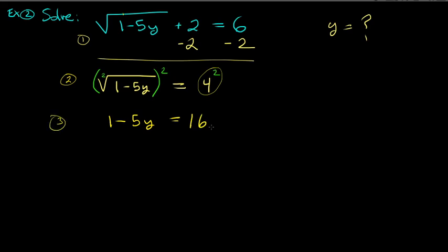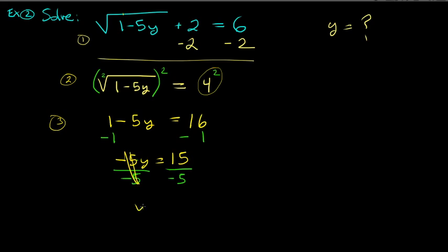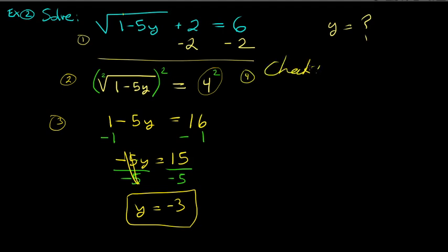Step three: solve the equation. Subtract 1 from both sides to get negative 5y equals 15. Then divide by negative 5, and y equals 15 divided by negative 5, which is negative 3. That's our solution — or is it? Step four: check.